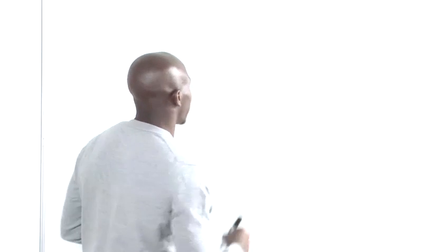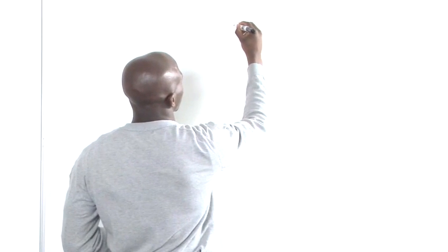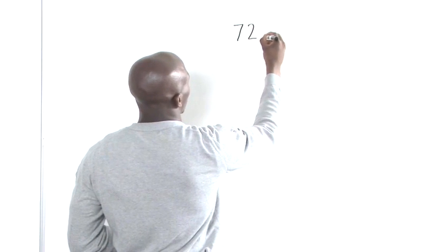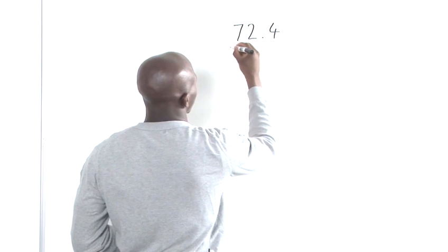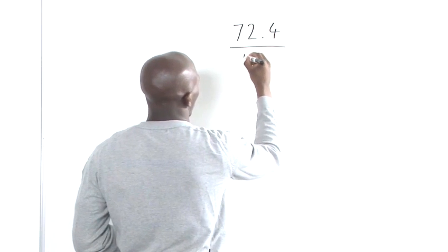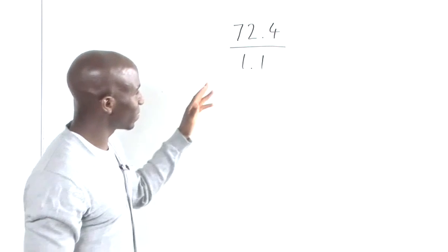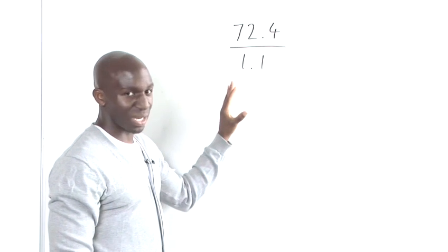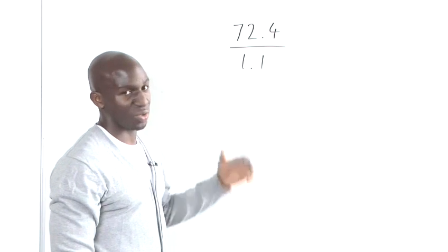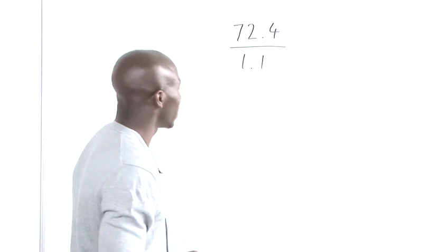The first thing we'll do is write out our sum, and what we're going to do here is we've got 72.4 divided by 1.1. This is a simple division that we're going to do just to show you the techniques that we're going to use.